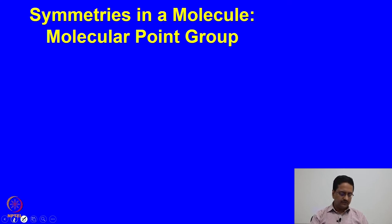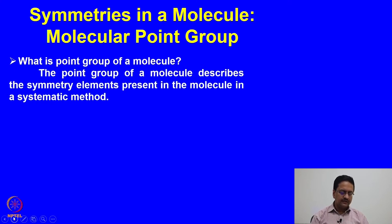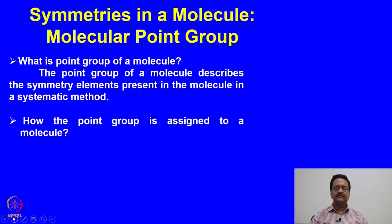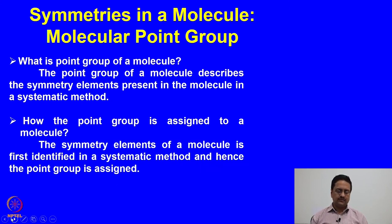The point group of a molecule represents all the symmetry elements that are present in a given molecule and describes them in a systematic manner. We should identify the symmetry elements present and based on the hierarchy of those symmetry elements, we then classify molecules into different point groups. In this lecture, we will try to understand how those point groups are assigned using a given procedure. The symmetry elements of a molecule are first identified in a systematic method and then the point group is assigned.